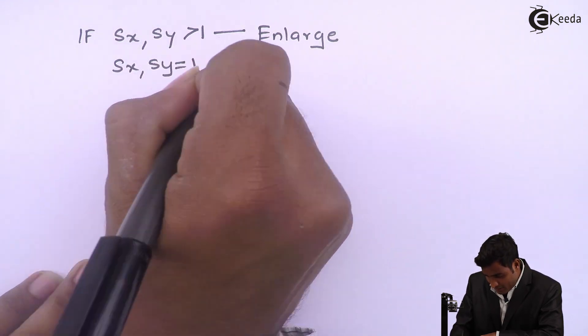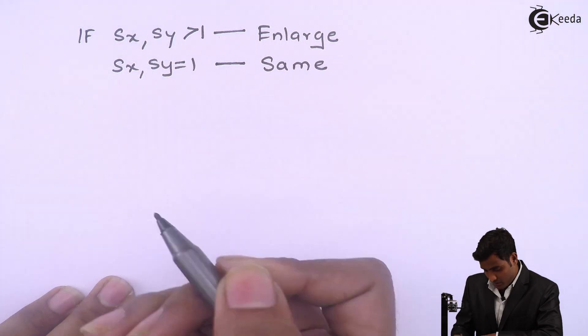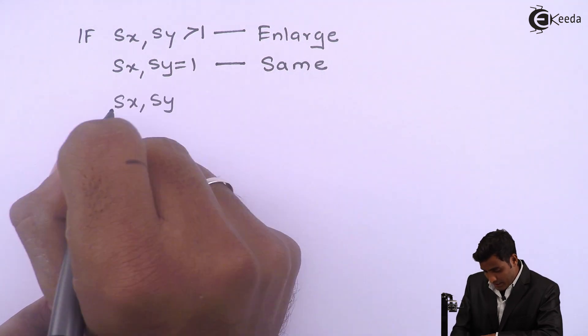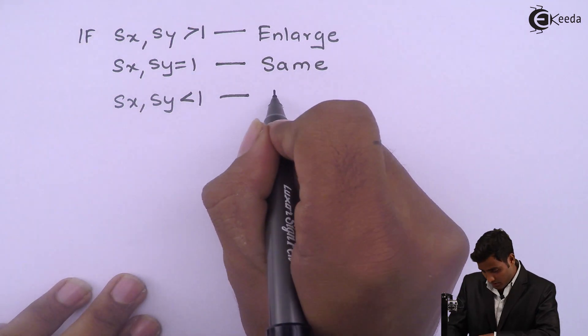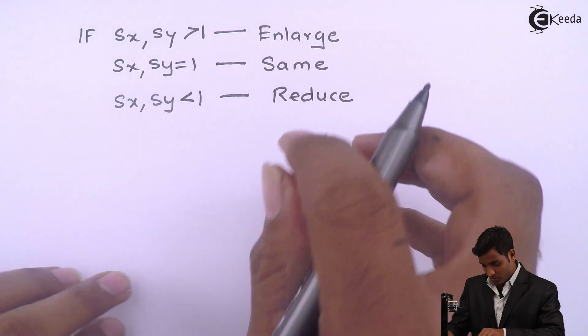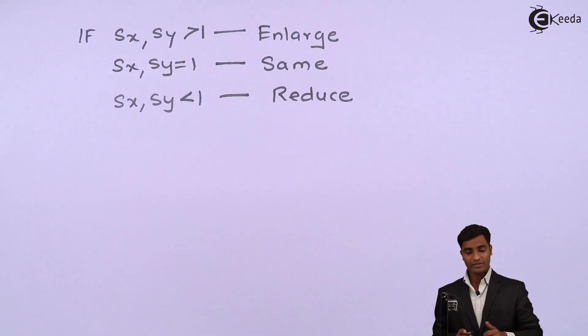If Sx or Sy is equal to 1 then the comment is same means figure has not changed. Third Sx or Sy is less than 1 then it is a reduced figure.